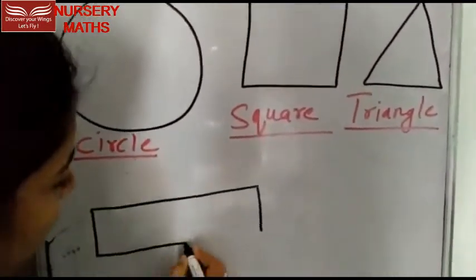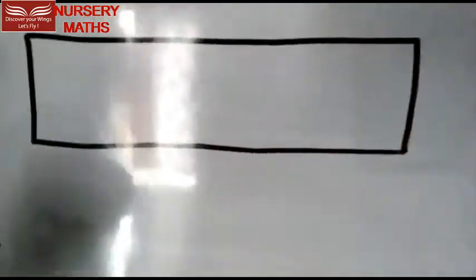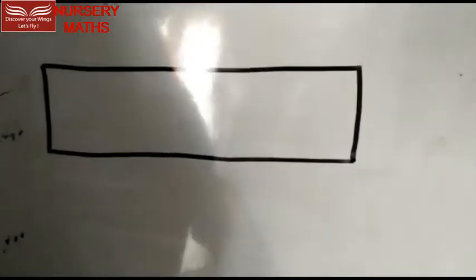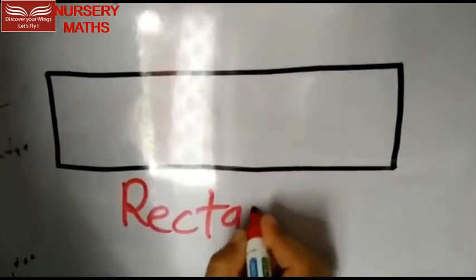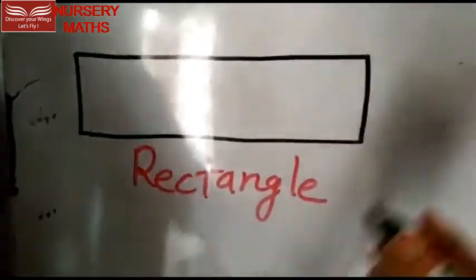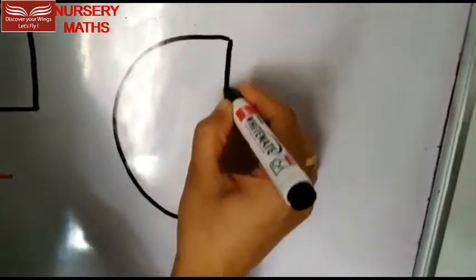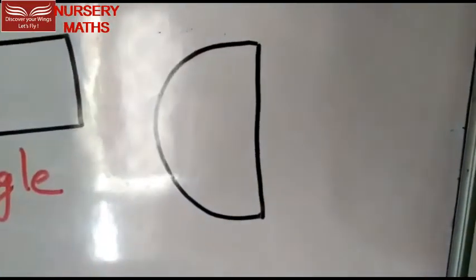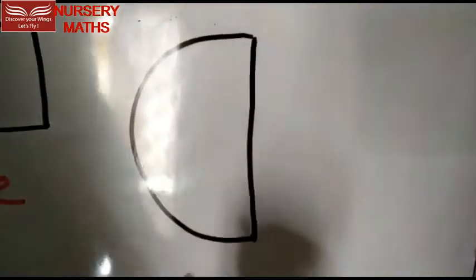Look carefully everyone, which shape is this? Yes, this is a rectangle - very good! One more shape now. Which shape is this? Come on - this is a semicircle.